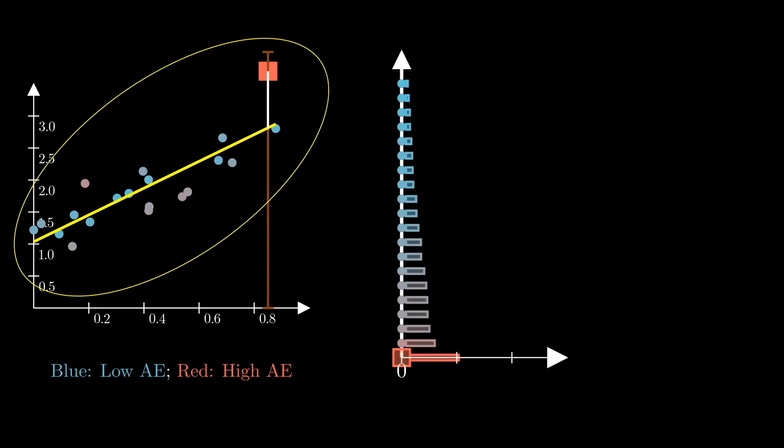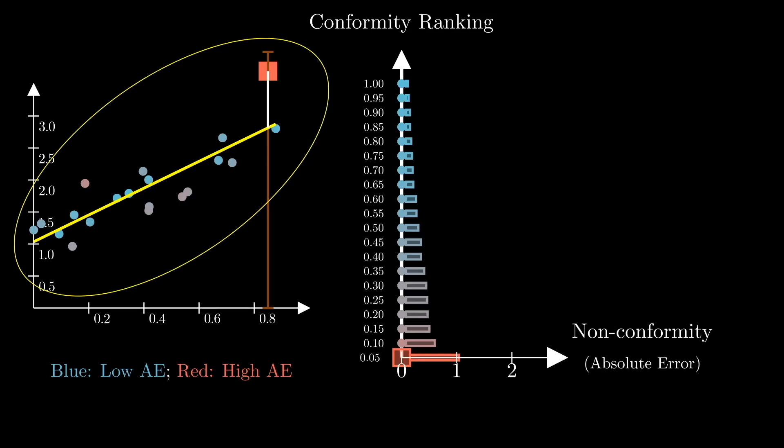On the right we have our conformity ladder, where the vertical axis shows the rank of each point in the sorted non-conformity array. That is, the higher the non-conformity of a point, the lower it sits in the vertical axis. The horizontal axis shows the non-conformity values, here the absolute error of each point.